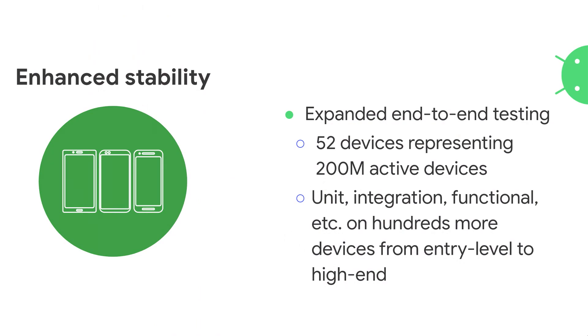The second thing the team really focused on is making sure that every time a new version of the library is shipped, the same kind of stability is still there. You might have heard about the test lab we have where we have 52 different kinds of devices representing over 200 million active devices out there in the wild. This is really us trying to make sure that every time you ship a new version of an app, you don't have to go through the pain of testing on all kinds of different phones. We added unit tests, integration tests, and functional tests on all kinds of devices — from low-end to high-end — so you can be sure that when you build out these features, it's going to be okay.